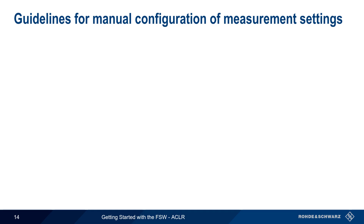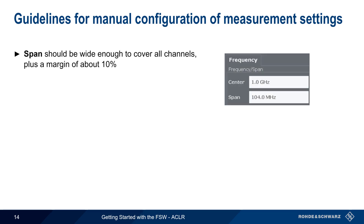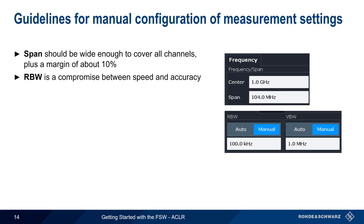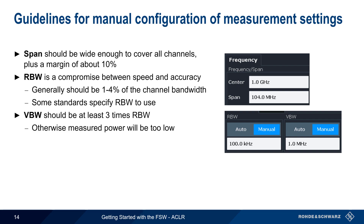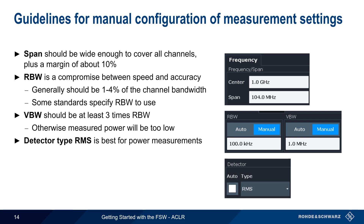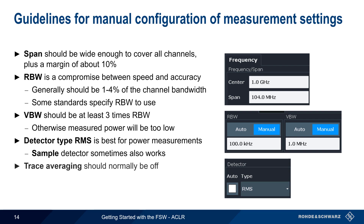There are, however, some recommendations if these parameters are configured manually. Span should be set wide enough to cover all channels, plus an additional recommended margin of 10%. As with most other measurements, resolution bandwidth involves a trade-off between speed and accuracy. For ACLR measurements, a resolution bandwidth of 1 to 4% of the channel bandwidth is recommended. Note that some standards specify the resolution bandwidth to be used. Video bandwidth should be set to at least three times the resolution bandwidth — setting it too low can cause the measured power to also be too low. Since ACLR is a power measurement, the RMS detector should be used, although the sample detector may provide acceptable results in some situations. Finally, trace averaging should be avoided, since this too can cause measurement results to be artificially low.